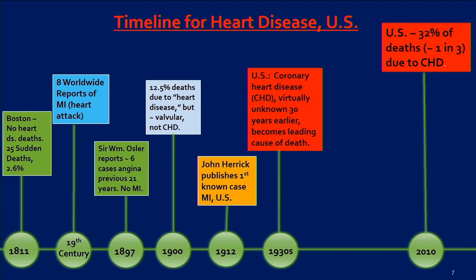In 1900, we know from Joan's paper that 12.5% of deaths were due to heart disease, but that wasn't coronary artery disease — those were valvular disease, rheumatic fever, endocarditis, syphilis — valvular cases, not coronary artery disease. In 1912, John Herrick publishes the first known case of myocardial infarction in the United States with documented autopsy evidence. By the 1930s, coronary heart disease becomes the leading cause of death — 30 years earlier, it was virtually unknown.